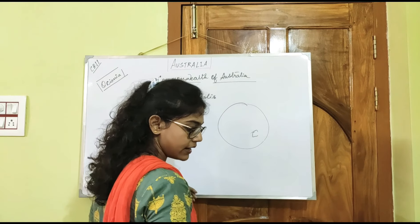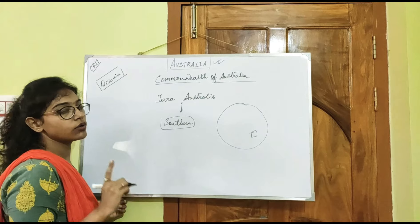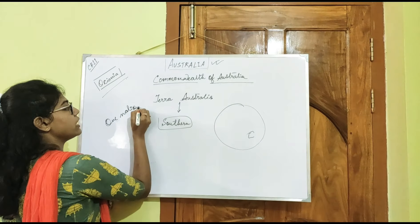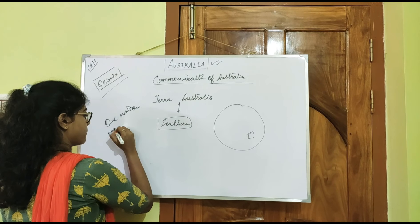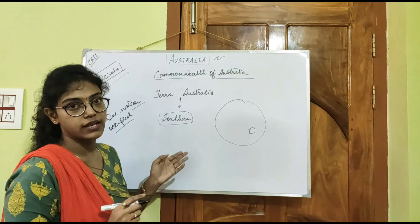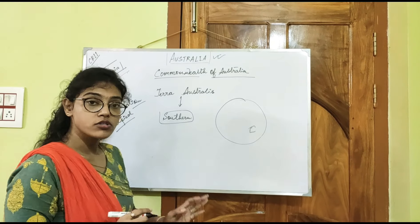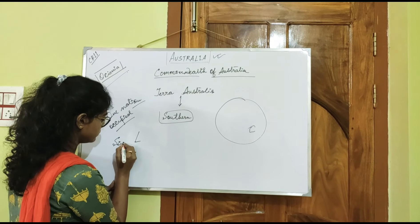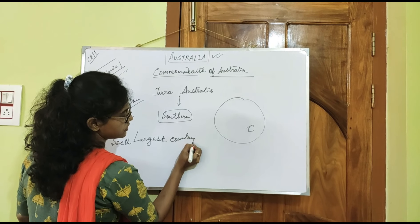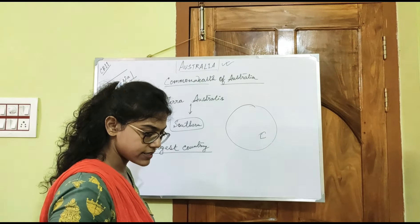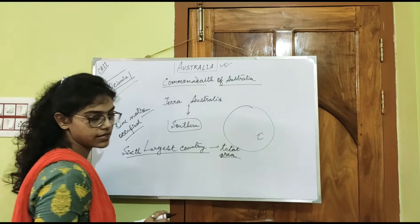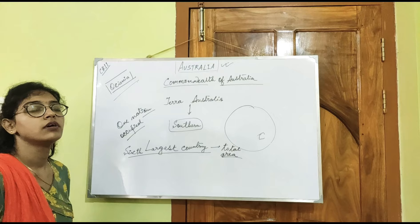The name Australia is derived from 'Terra Australis.' Australia is the one and only nation which occupies the total whole of Oceania — one nation fully occupying Oceania. Already I said it is the largest country in Oceania, and also it is the sixth largest country in the world. These are some normal features of Australia.